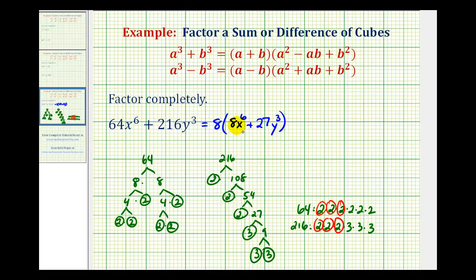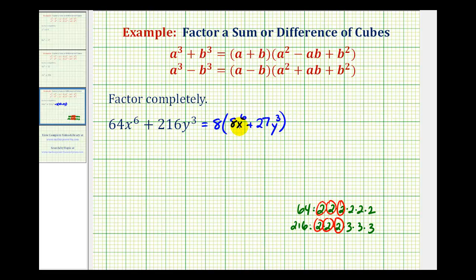Now from here, looking at our binomial factor, we should recognize that 8x^6 is a perfect cube, and so is 27y^3. The reason 8x^6 is a perfect cube is because if we have 2x^2 raised to the 3rd, this will equal 8x^6. And 27y^3 is a perfect cube because if we have 3y raised to the 3rd power, this is equal to 27y^3.